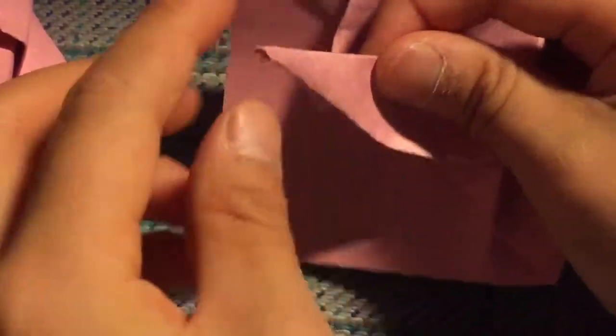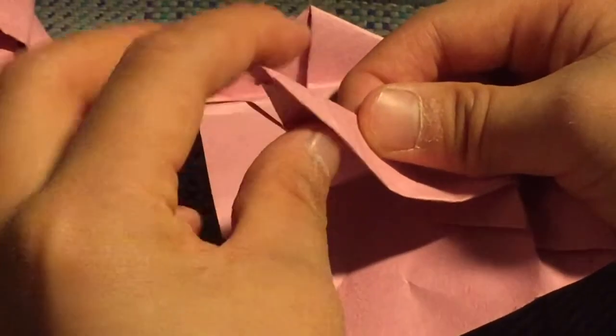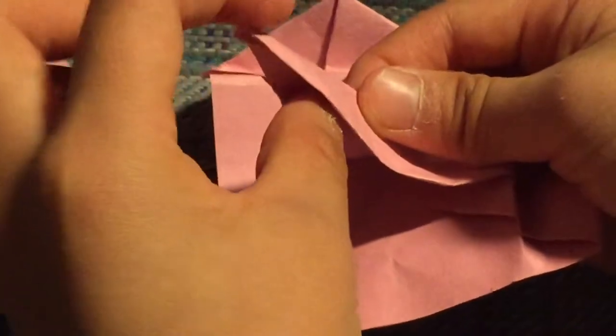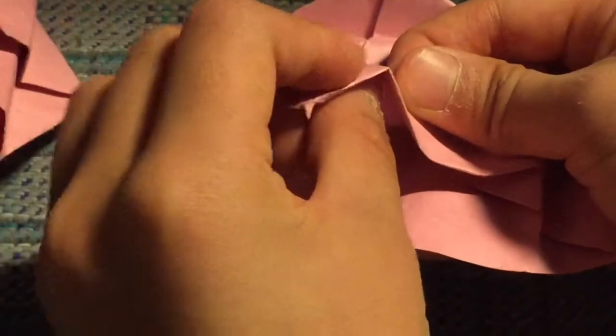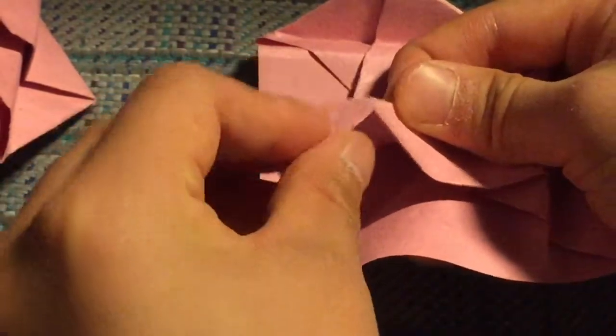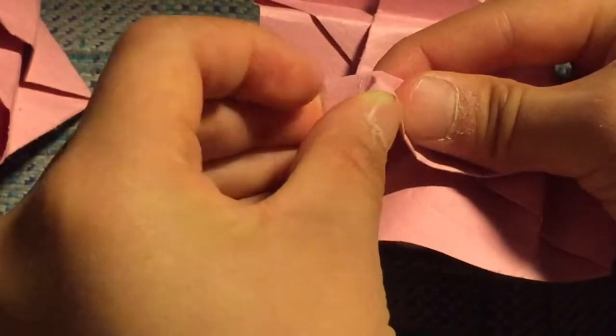So we're going to fold it like a swan, and in case you don't know how to do that, put your thumb in here and pull back like this to make some kind of triangle shape, and then push this edge in.